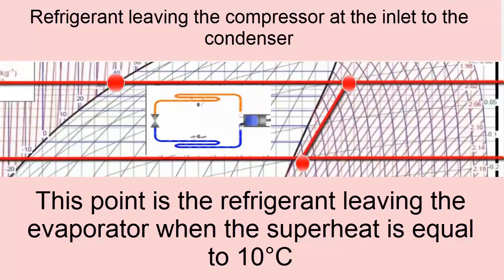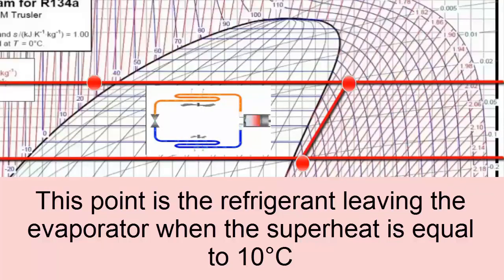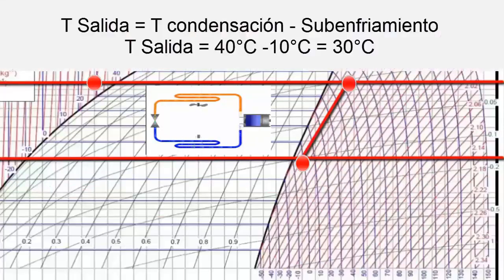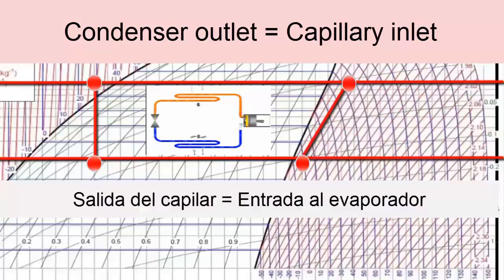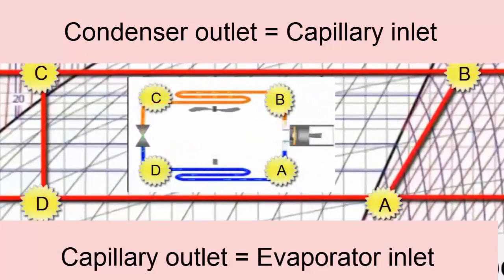This point represents the refrigerant leaving the condenser with zero subcooling. When the subcooling is 10 degrees, then this is the output, because 40 degrees minus 10 degrees of subcooling is 30 degrees. So the point is shifted to the left. Remember that subcooling is the loss of temperature once the refrigerant is in a liquid state. This is the entrance to the capillary. This is the outlet of the capillary, which is also the inlet to the evaporator.